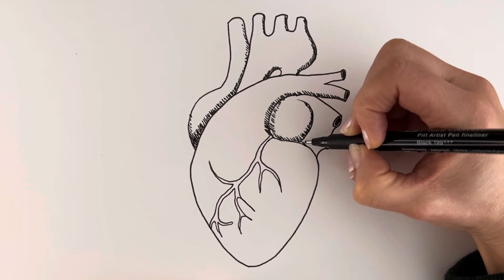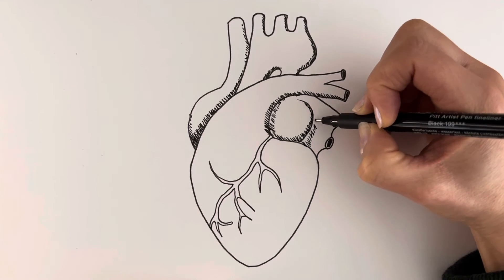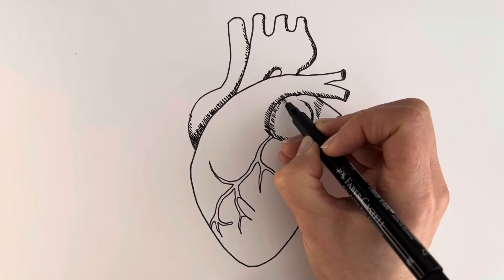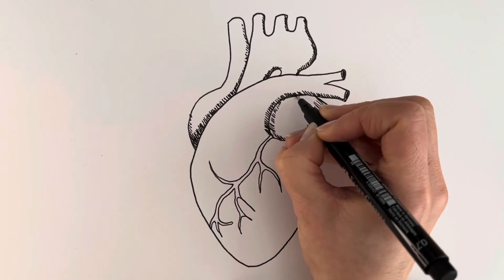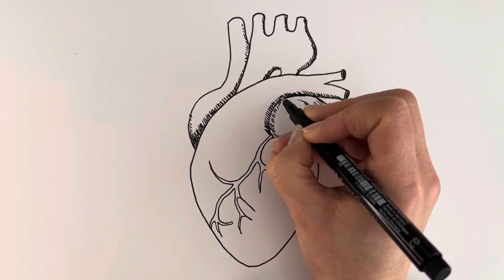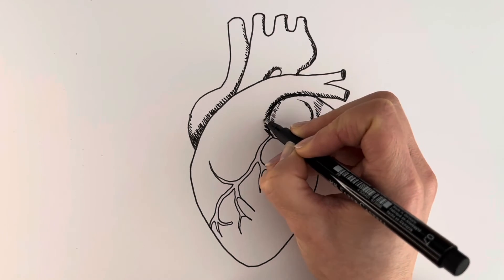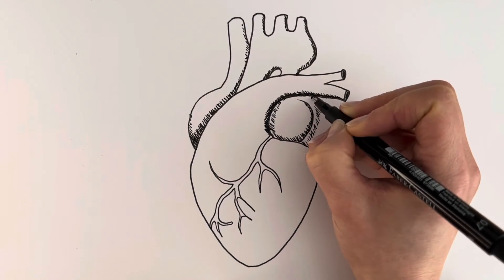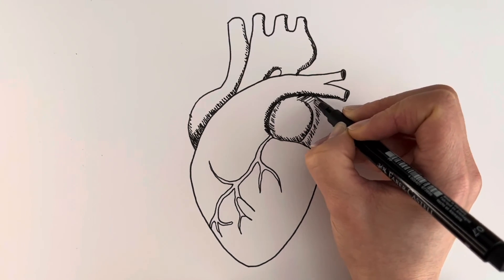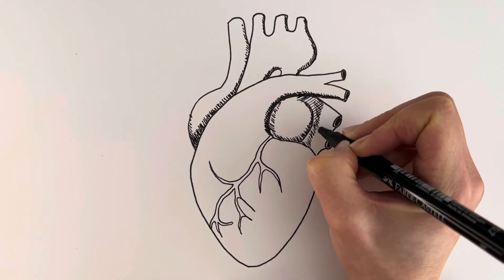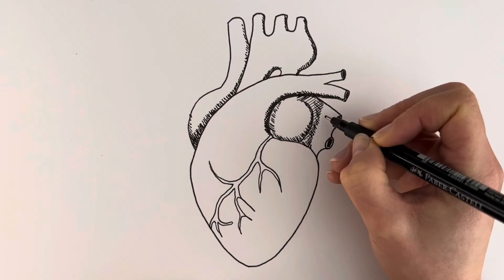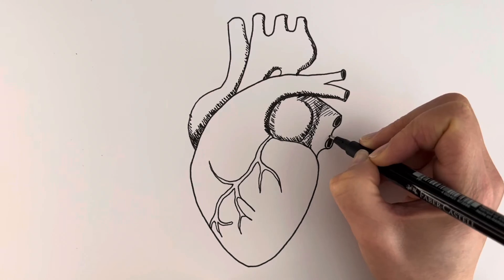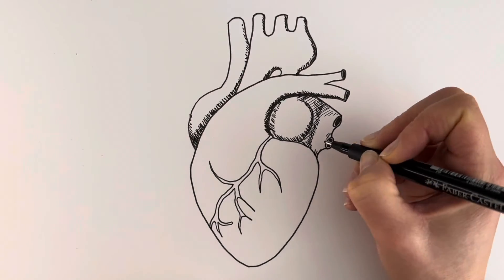I'm just going to draw a little bit more shading down here. A little bit more under here. Drawing lines in the opposite direction now, cross-hatching. If you watch lots of my videos, you know that I'm a big fan of cross-hatching when it comes to doing shadows.